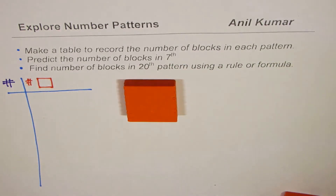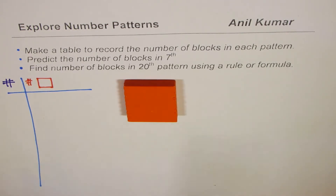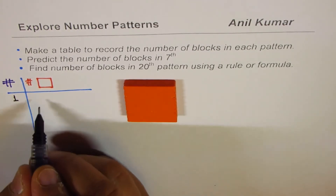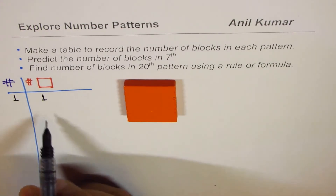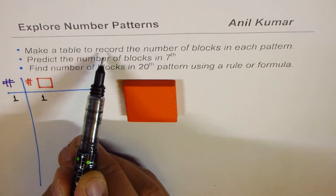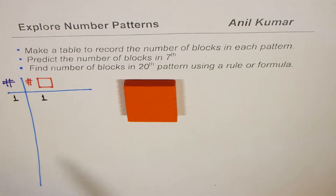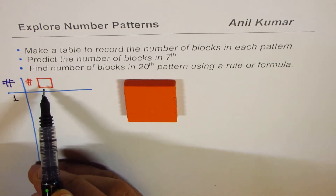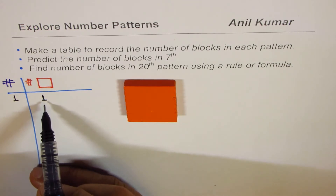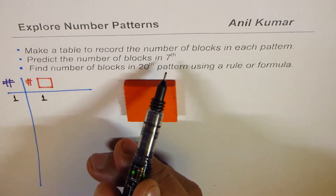Let's begin with just one square block. So in that case, we have pattern number one. I'll record this as pattern number one, and how many squares do I have? Just one. So I hope you understand what I've written here — a table to record the number of blocks in each pattern. These are the pattern numbers, and in column two we'll write down the number of blocks. Part two is to predict the number of blocks in the seventh pattern.